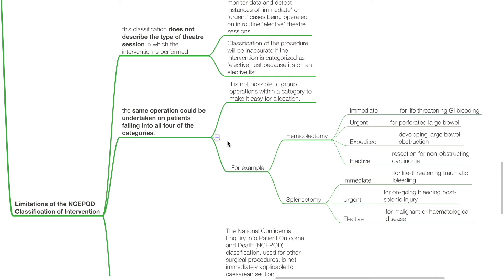For example, a hemicolectomy may be immediate for life-threatening GI bleed, urgent for perforated large bowel, expedited for developing large bowel obstruction, or elective for resection of non-obstructing carcinoma. A splenectomy may be immediate for life-threatening traumatic bleed, urgent for ongoing bleeding post-splenic injury, or elective for malignant or haematological disease.